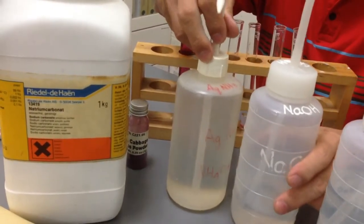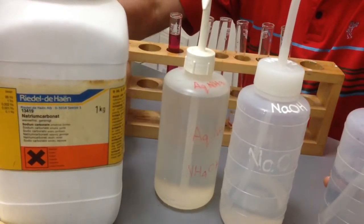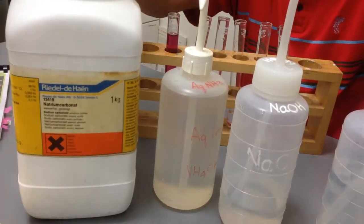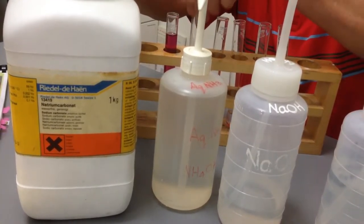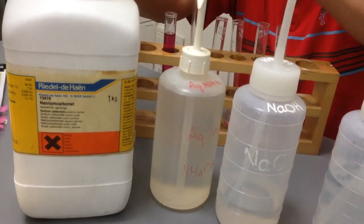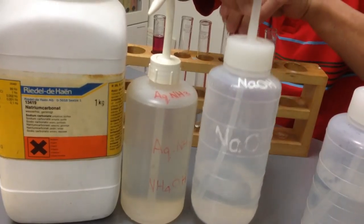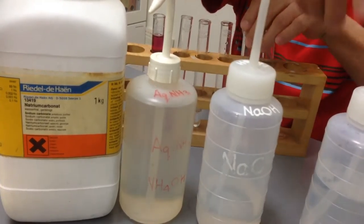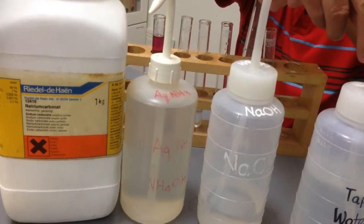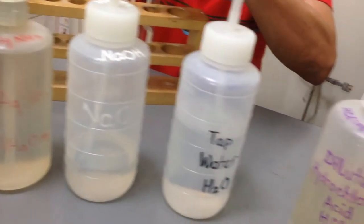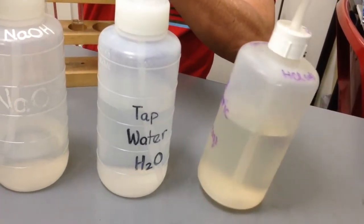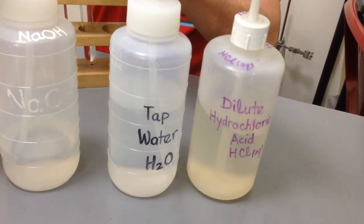Let me go through the five test tubes again. The first test tube here is sodium carbonate solution. The second test tube is aqueous ammonia. Third is sodium hydroxide. Fourth is just tap water. And fifth is hydrochloric acid, dilute hydrochloric acid.